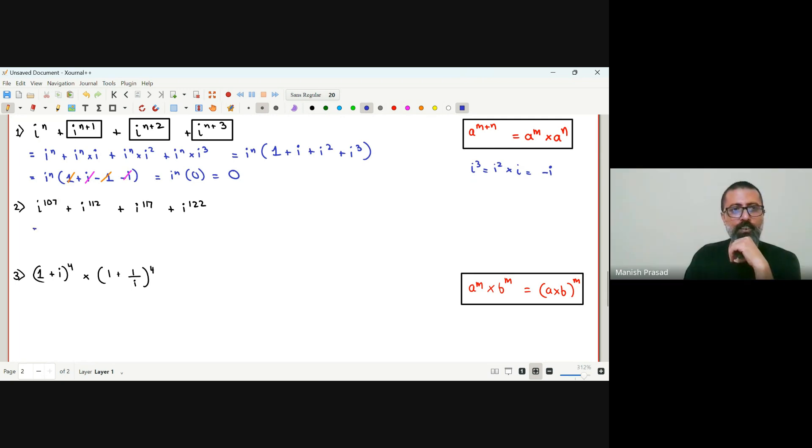Second question. So i into i to the power 106 plus i square into 2, 5, 10, 2, 6, 12 plus i into i to the power 116 plus i square, 2, 6, 12, 2, 1, 2.